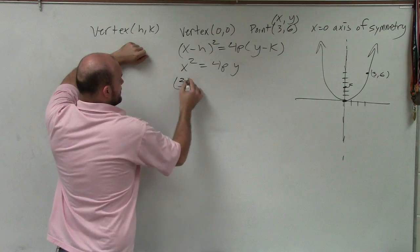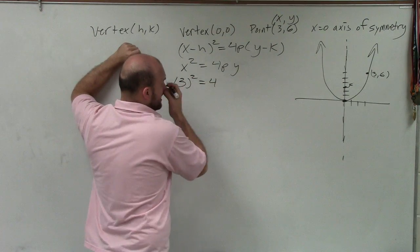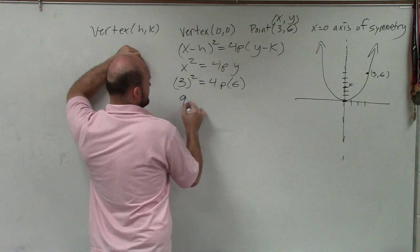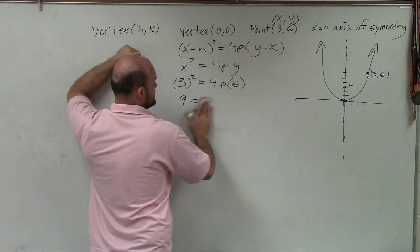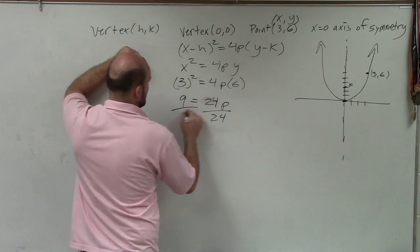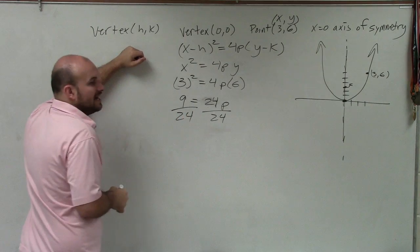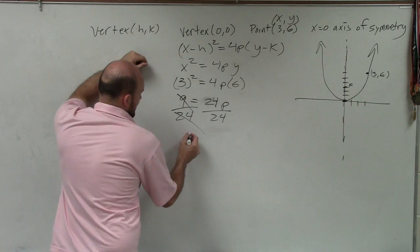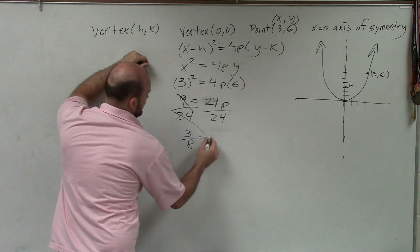So I put 3 squared equals 4 times p times 6. That equals 9 equals 24p, divided by 24, divide by 24. I can reduce this, divide a 3 in the top and bottom, so I have 3/8 equals p.